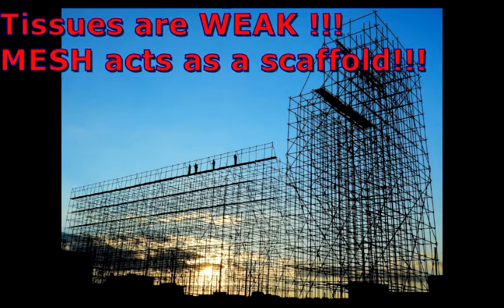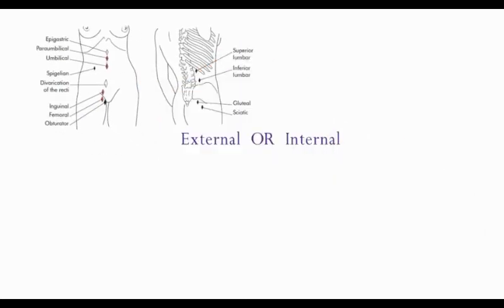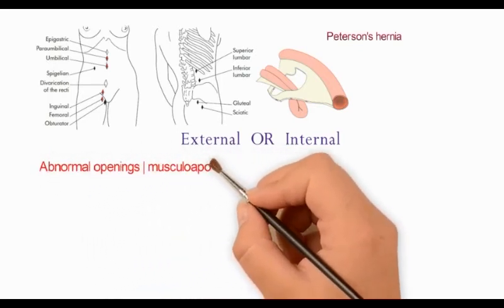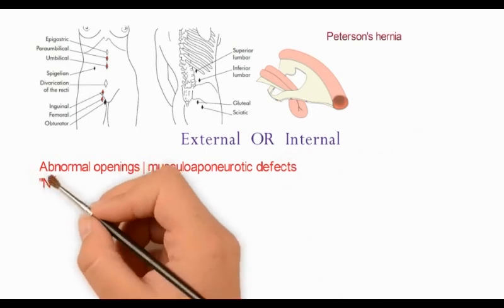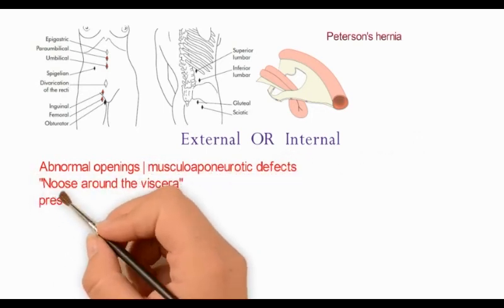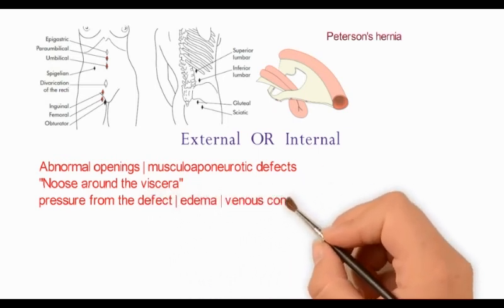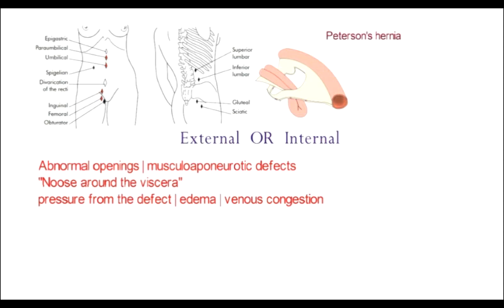A mesh acts as a scaffold into which collagen will grow. Depending on the location of the abnormal opening, hernias could be either external or internal. These are the common sites of external hernia. A Petersen hernia is a herniation of bowel through a mesenteric defect. The abnormal openings are usually musculoaponeurotic defects which constrict the viscera, causing pressure edema, venous congestion, and strangulation, ultimately leading to perforation.